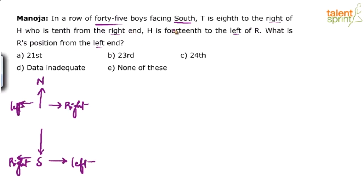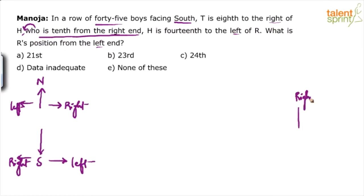There are 45 boys facing south. T is 8th to the right of H, who is 10th from the right end. Now, 'who' here refers to H — who always refers to the preceding person. So H is 10th from the right end. Let's say this is the right end, and H is the 10th position from the right end.